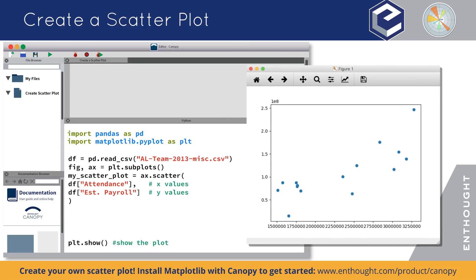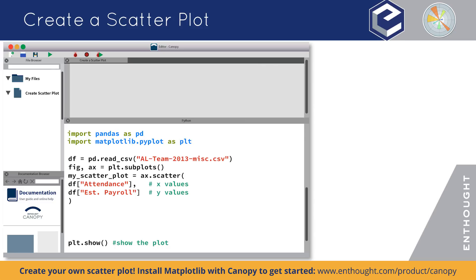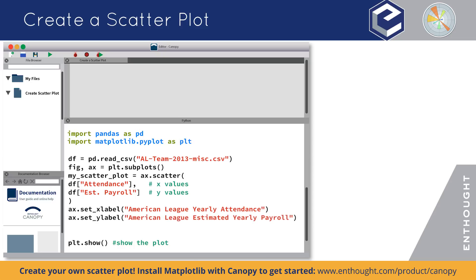Let's add titles so it's clear what each axis represents. The x-axis shows the total number of people who attended a team's games for the year. The y-axis shows a cumulative annual team salary. Let's also add a title to the plot itself.